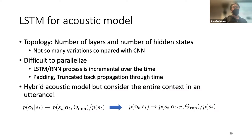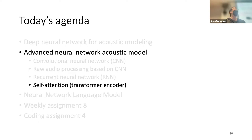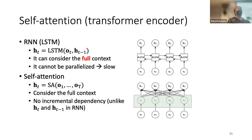Unlike LSTM, CNN can parallelize computation across time. However, LSTM can capture the entire context, so people moved from CNN or feed-forward networks to LSTM. But nowadays we also have an alternative option: self-attention, or what I call the transformer encoder. Self-attention is widely used in many areas including speech, and I believe many people have heard about this network architecture.